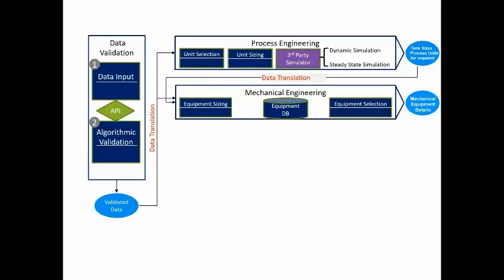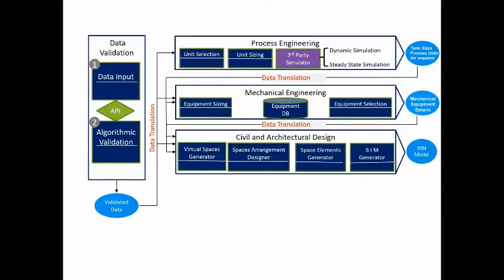So now we've completed the process engineering phase, and we've completed the mechanical engineering phase. And next, we translate that data, and we go to the civil and architectural design. And here we are running through a set of algorithms and a code base, which includes evolutionary algorithms as well, that are generating a BIM model.